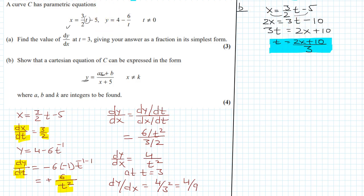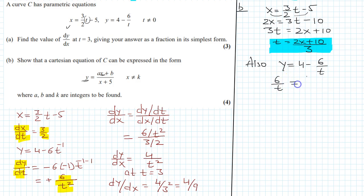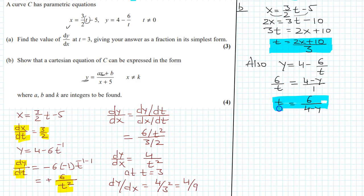Now taking the second equation, y = 4 - 6/t, we rearrange to get 6/t = 4 - y, so t = 6/(4 - y). This gives another relation between t and y.